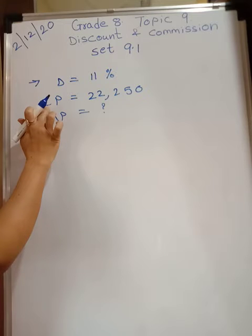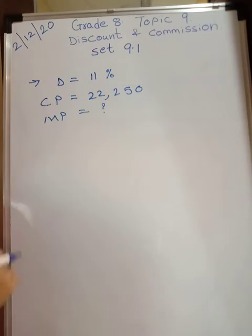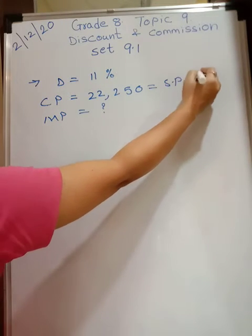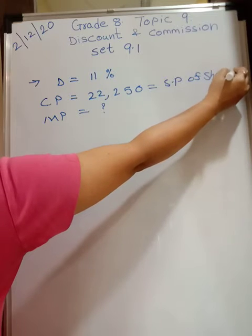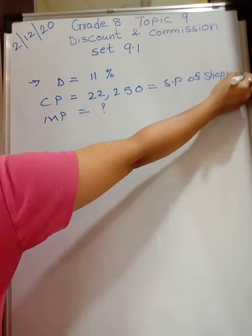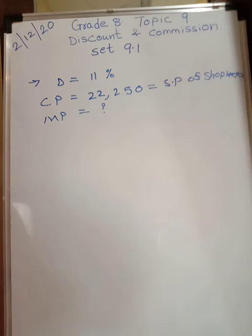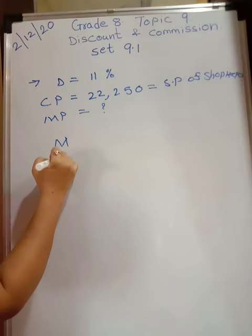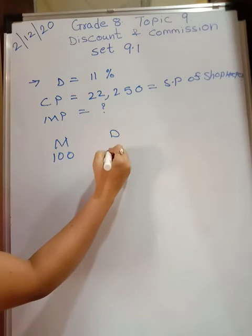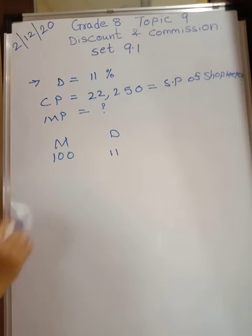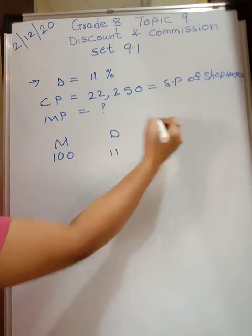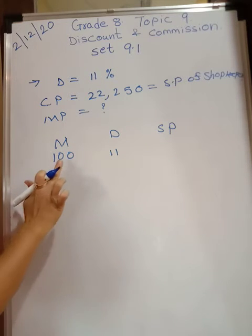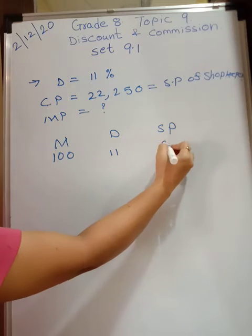So cost price of the customer equals selling price of the shopkeeper. Now discount is 11 percent — if marked price is 100 rupees, discount is 11 rupees. So selling price will be 100 minus 11 equals 89 rupees.